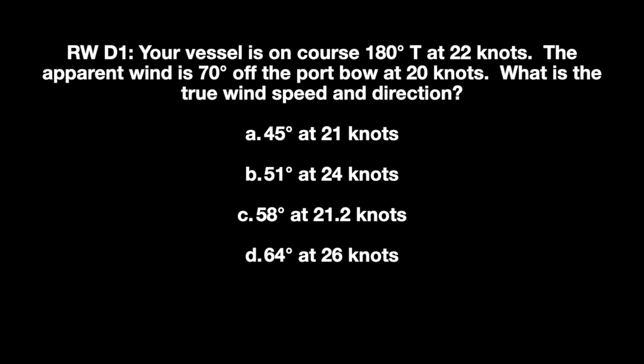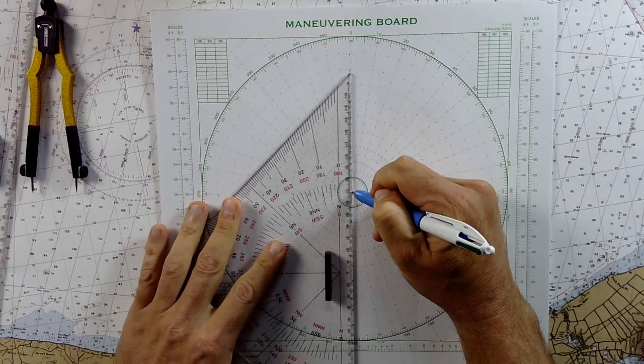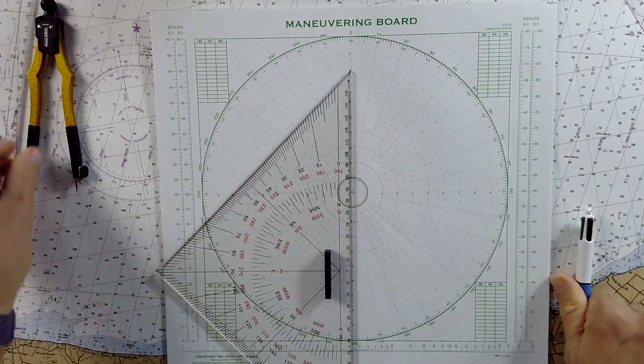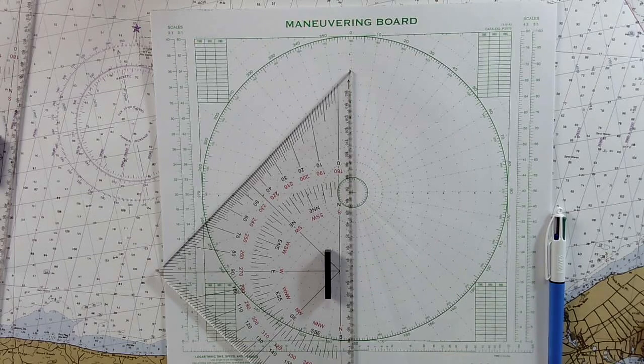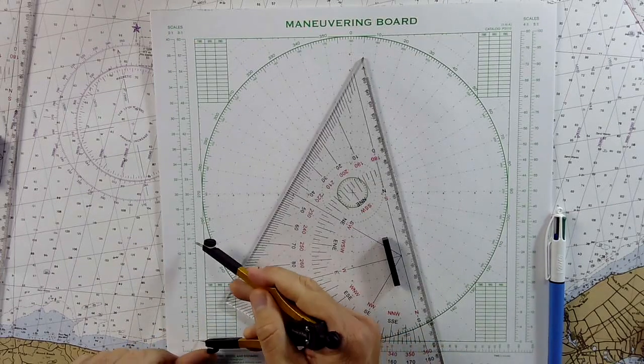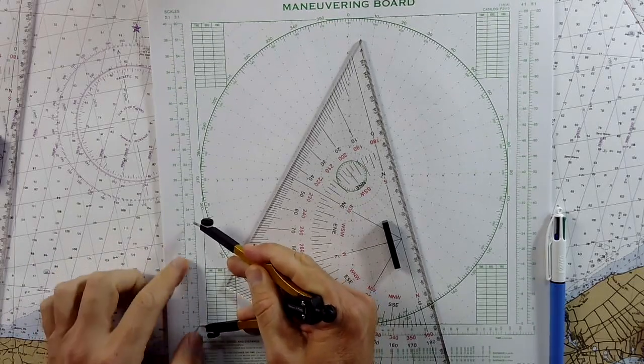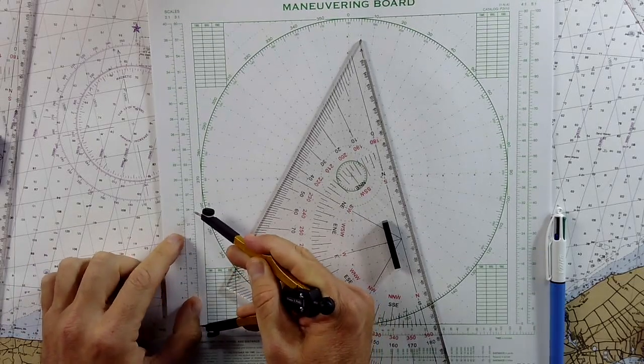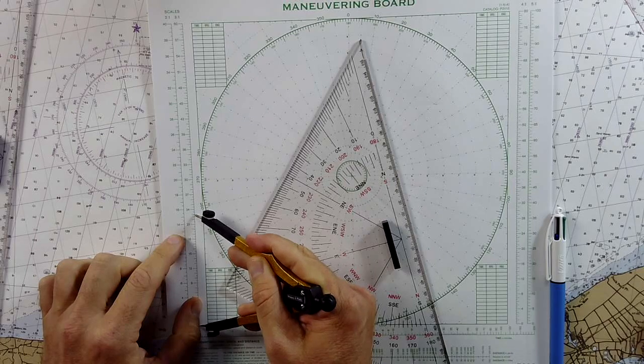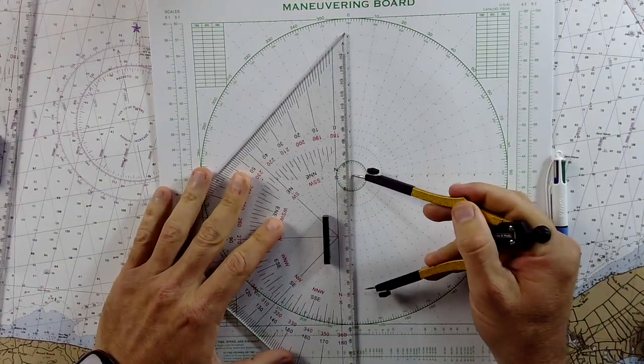it says that your vessel is on course 180 degrees true at 22 knots. So the first step here would be to draw 180 degrees true and then for a distance of 22 knots. So we'll probably use the 3 to 1 scale in this case. On the maneuvering board over here, I'll set my measurement to 22 knots. So 180 at 22 knots.